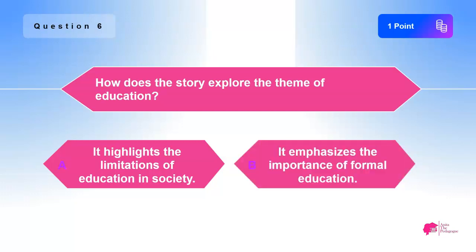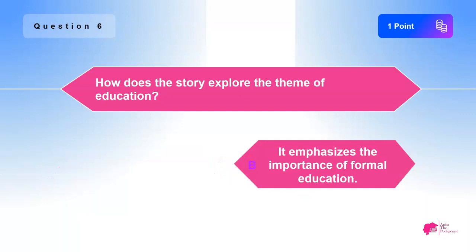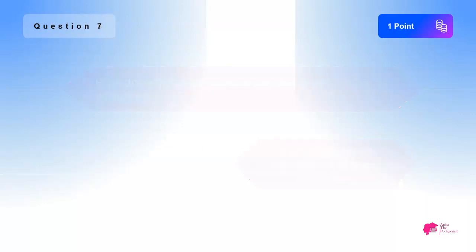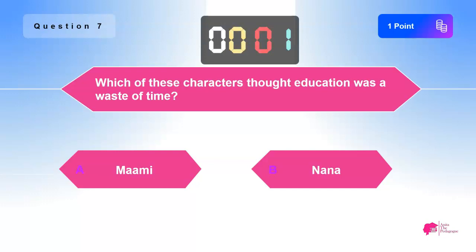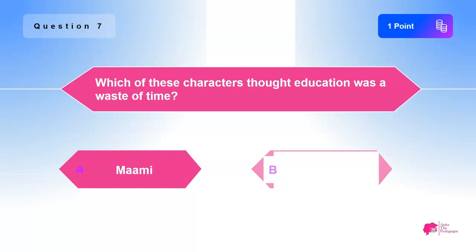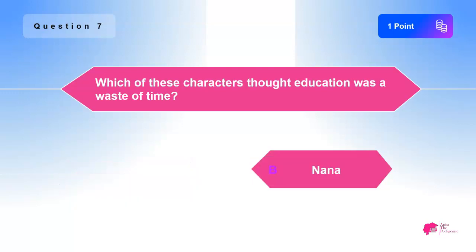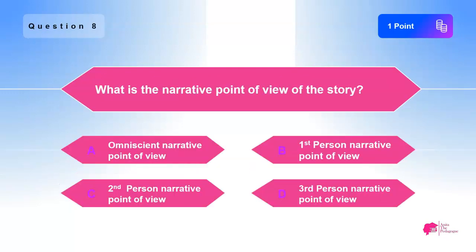The answer is B) It emphasizes the importance of formal education. Question seven: Which of these characters thought education was a waste of time? A) Mommy, B) Nana. The answer is B) Nana.